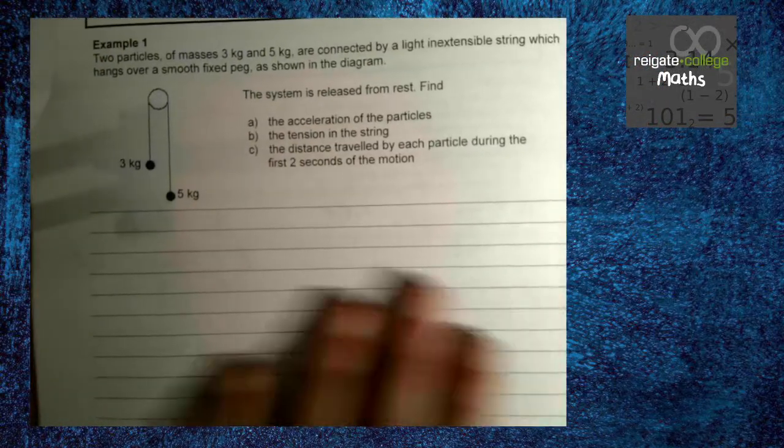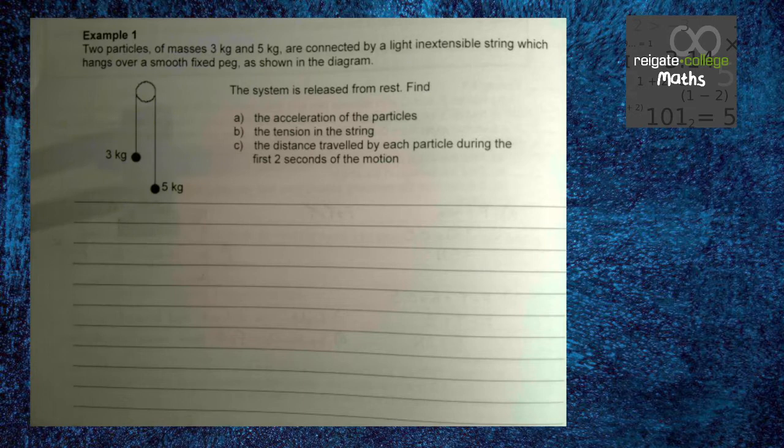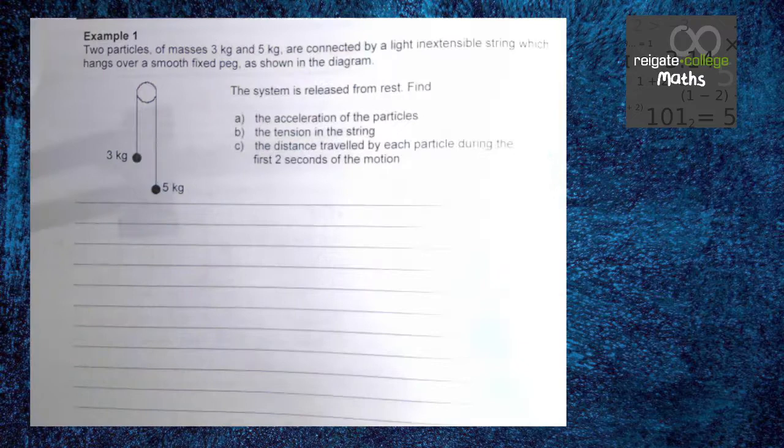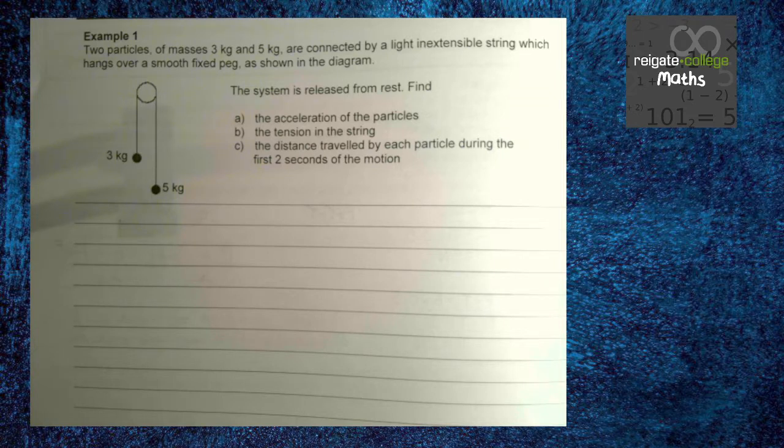We're not going to worry about that though, what we're going to be looking at is some examples of how pulleys work. In principle, these questions are going to work exactly the same as the connected particles questions from the previous video. The only difference, however, is that instead of both particles moving in the same direction and on the same surface, here we're going to have particles moving in two directions. So let's just look at this example first. We have two particles, masses 3 and 5 kilograms, connected by light, inextensible string hanging over a smooth, fixed peg, shown in the diagram. So for the purposes of this, pulleys are far more complicated than how we're going to model them. Pulleys are lots of systems with lots of wheels. We just say, cool, it's a peg that we hang a rope over.